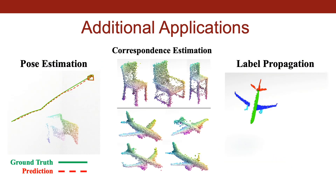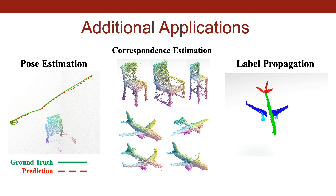CASPER can be used for other applications like camera pose estimation, correspondence estimation, and propagation of labels across time and objects. Please see the paper for more examples.